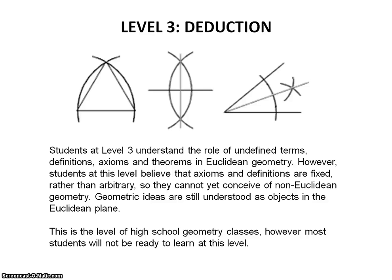Level 3 is Deduction. Students at this level understand the role of undefined terms, definition of terms, axioms, and theorems in Euclidean geometry. However, they believe these are fixed rather than arbitrary, and so they are not ready to deal with non-Euclidean geometries. Geometric ideals are still understood to be in the Euclidean plane. Level 3 is the level of a high school geometry class; however, most students in high school are not ready to learn at this level, so if a teacher teaches at this level, the students may not be ready to engage.